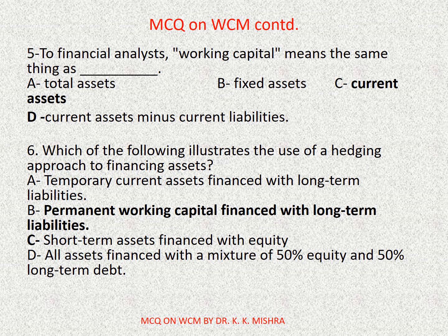Question number five: to financial analysts, working capital means the same thing as dash capital. Options are: A) Total Assets, B) Fixed Assets, C) Current Assets, D) Current Assets minus Current Liabilities. Correct option is D: Current Assets minus Current Liabilities.